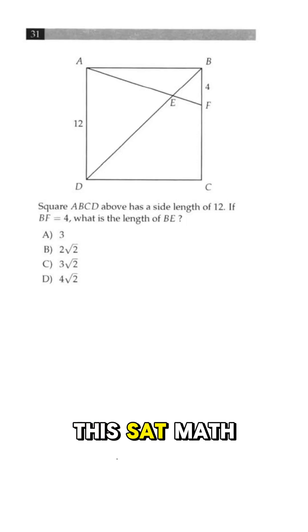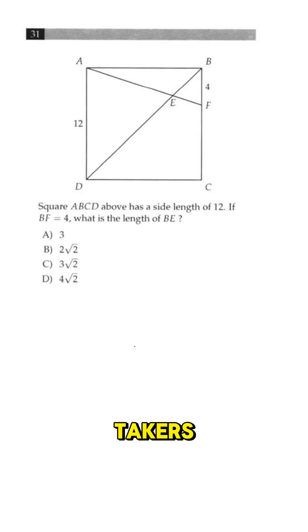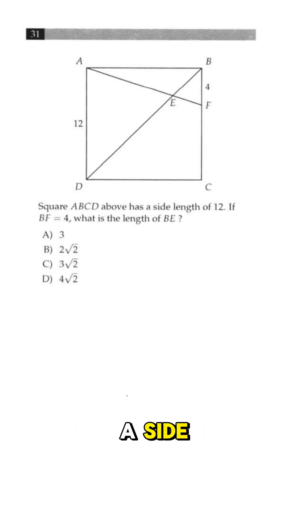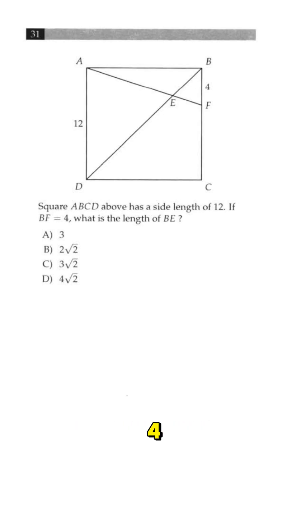This SAT math question stumps 87% of test takers, but it is so much easier than it seems. We're asked: square ABCD has a side length of 12. If BF equals 4, what is the length of BE?